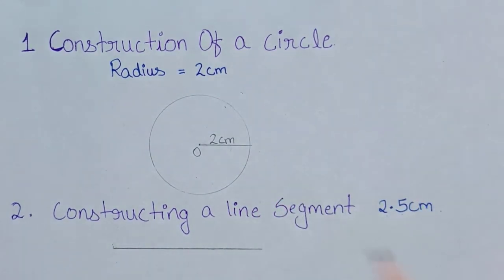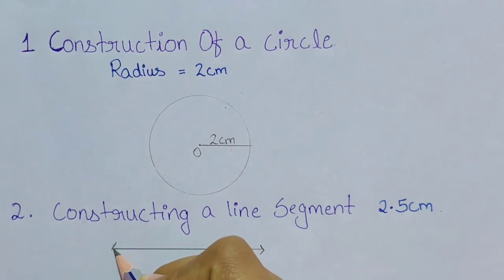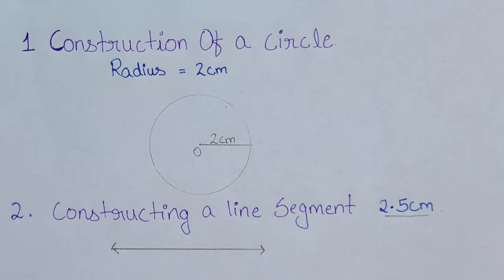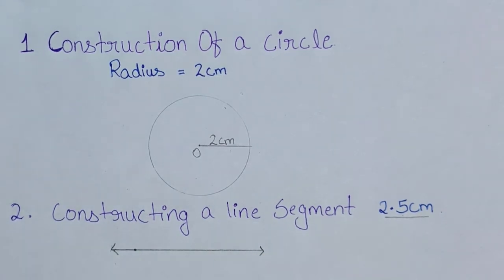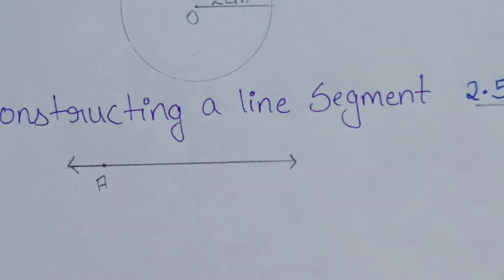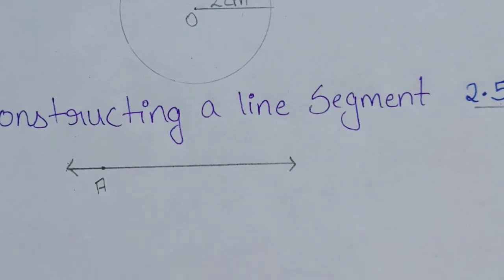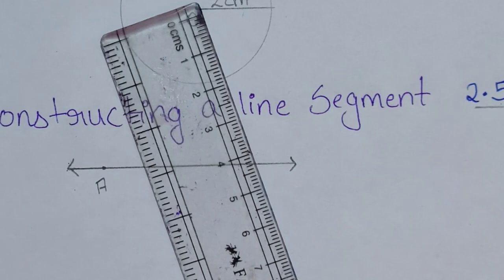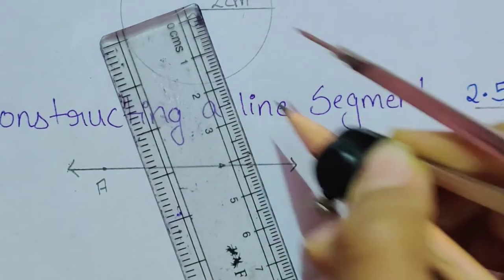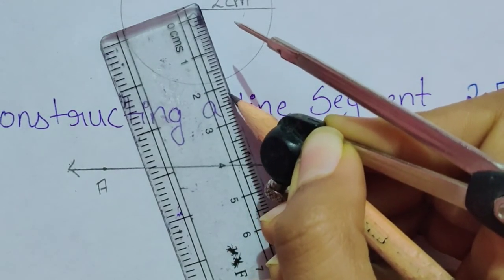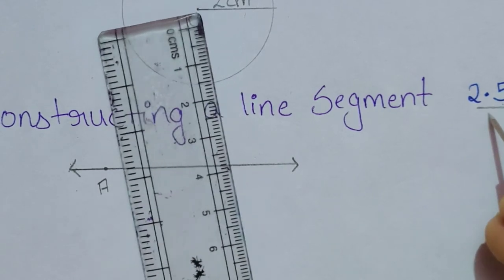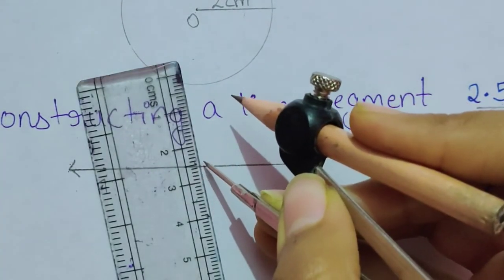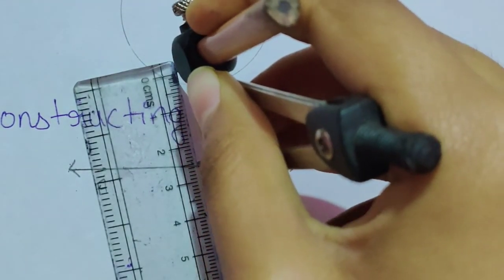We draw a line. Now we have to construct a line segment of 2.5 centimeters. Since end points of a line segment are fixed, we fix an endpoint — name it point A. Next, we open our compass to 2.5 centimeters using the scale: counting 2.1, 2.2, 2.3, 2.4, and the bigger middle line is 0.5, giving us 2.5.